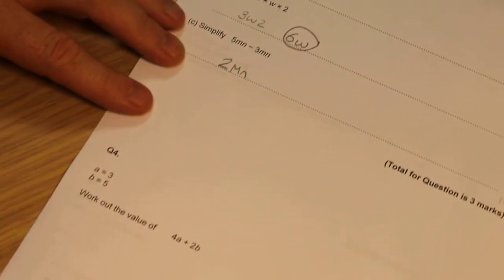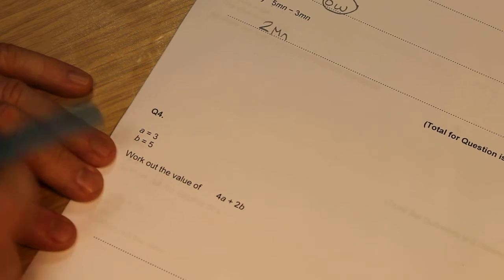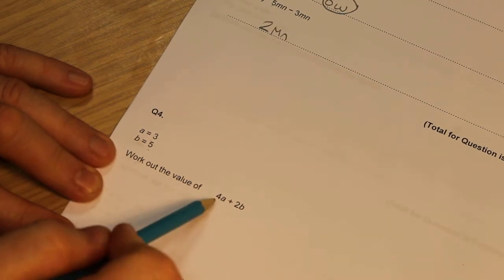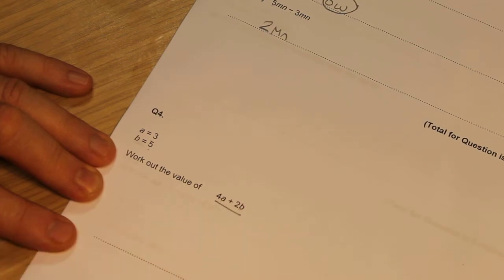Question 4 is slightly different. This isn't simplifying. This is called substitution, because they tell you the different values of a and b, and they give you a little expression where they're expecting you to put the values of a and b into this.